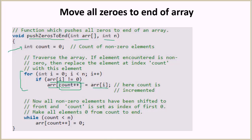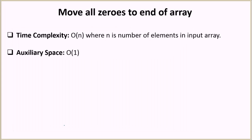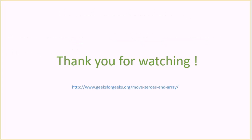Once the full traversal is done, all non-zero elements have been shifted to the front and count is set as the index of the first zero. We then make all elements zero from index count to the end: while count is less than n, we place zero at index count and do count++. This way all non-zero elements are to the left, all zeros are to the right, and the non-zero elements preserve their order. This achieves O(n) time complexity and O(1) space complexity. Do visit the link to find all the discussed material and run the code on the web IDE available on the GeeksForGeeks website. Thank you.